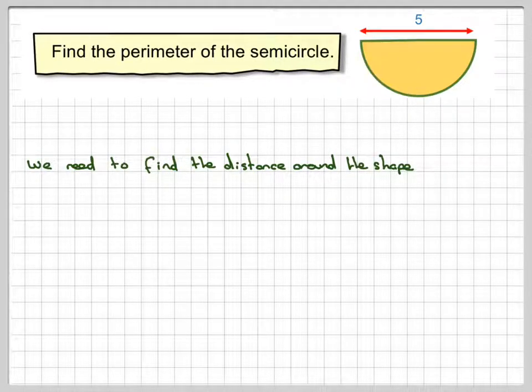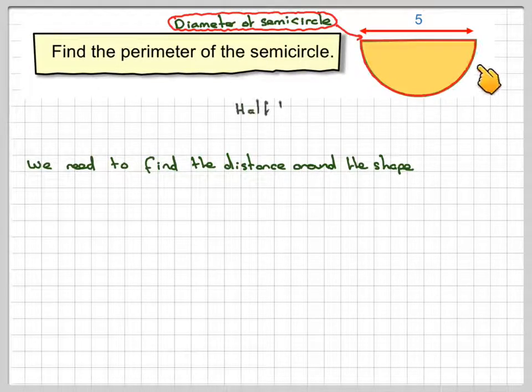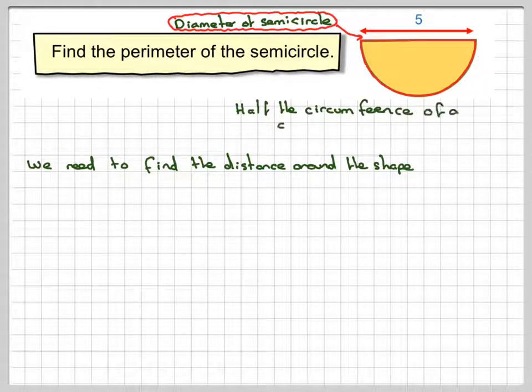It's made up of two bits. The first is a straight line which is the diameter of the semicircle, and then this bit here which is half the circumference of a circle with diameter five.